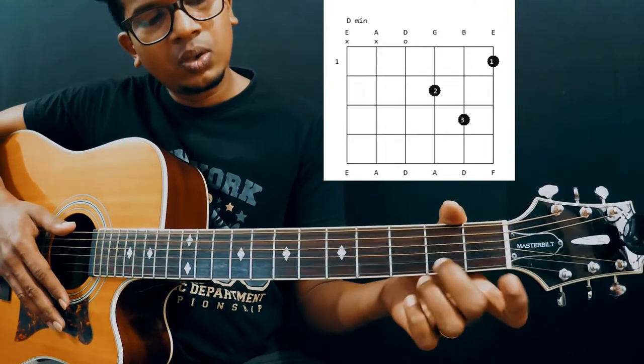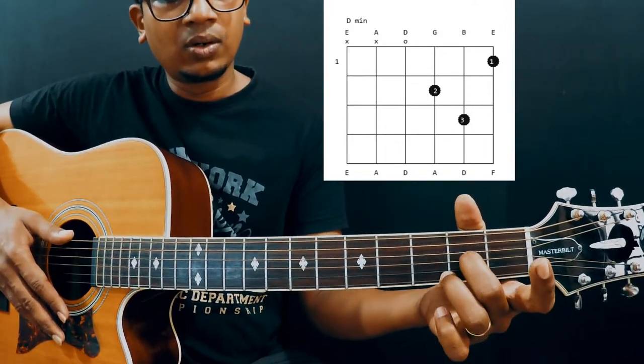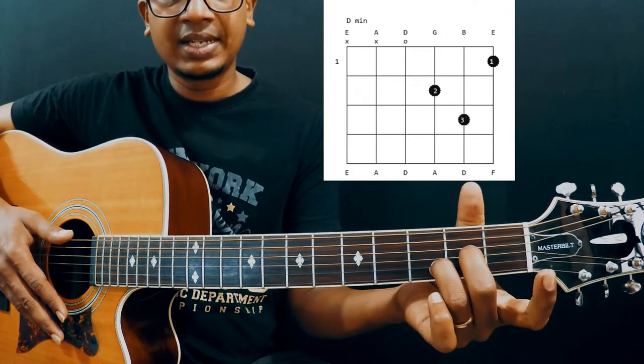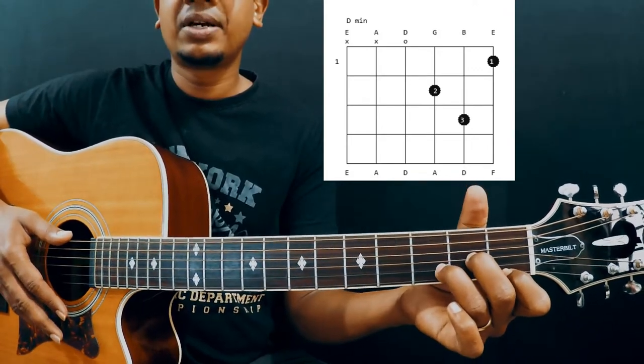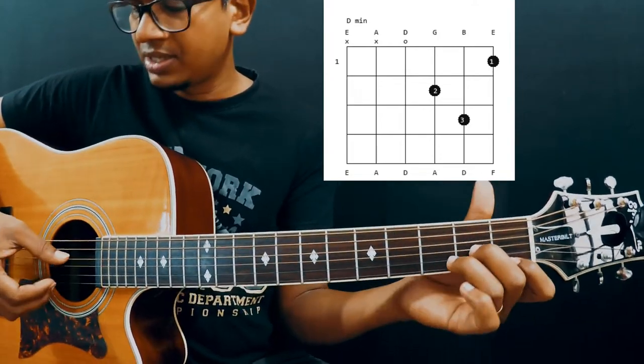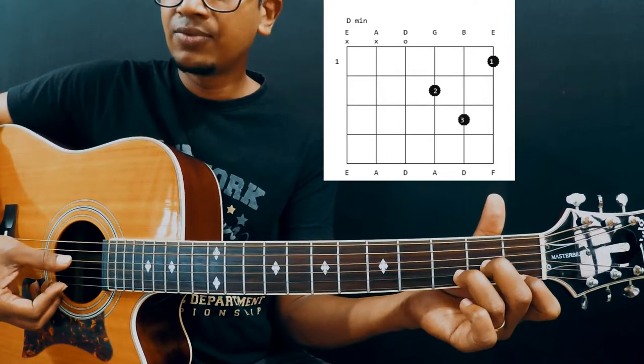Take your middle finger, place it on 2nd fret of the 3rd string. And your ring finger on 3rd fret of the 2nd string. And your index finger on 1st fret of the 1st string. As I mentioned, it's a 4th string chord. We have to play from 4th string. 4th string is open.